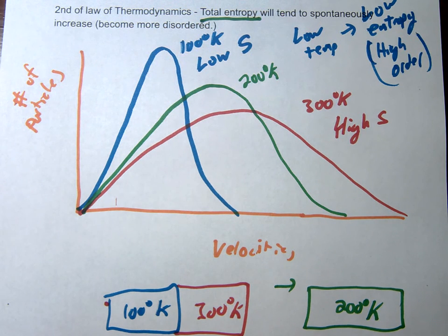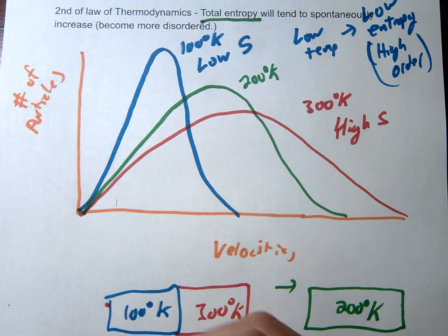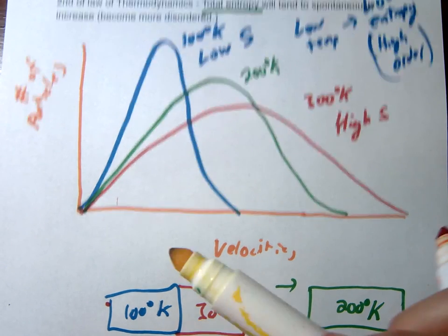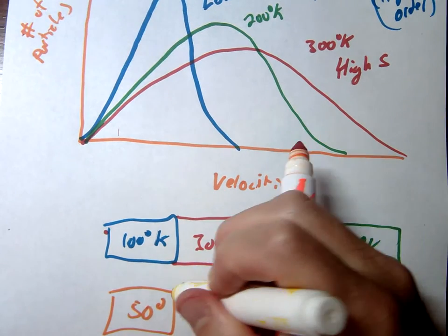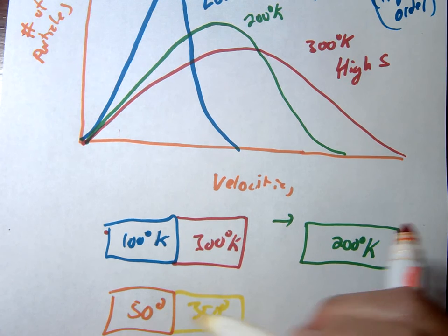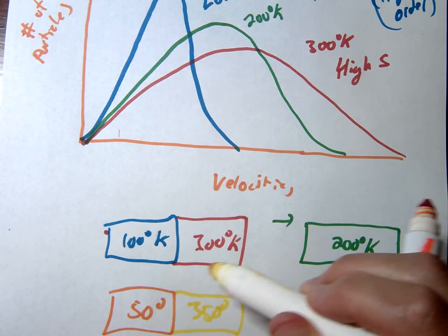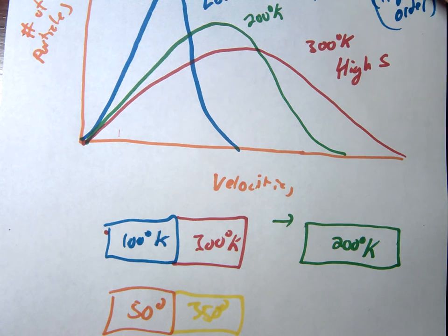Let me just say this another way. What you will not see with this is you will not see this turn into 50 degrees and this turn into 350. Notice that this does not violate conservation of energy. We could lose 50 joules of energy and this could gain 50 joules of energy. However,